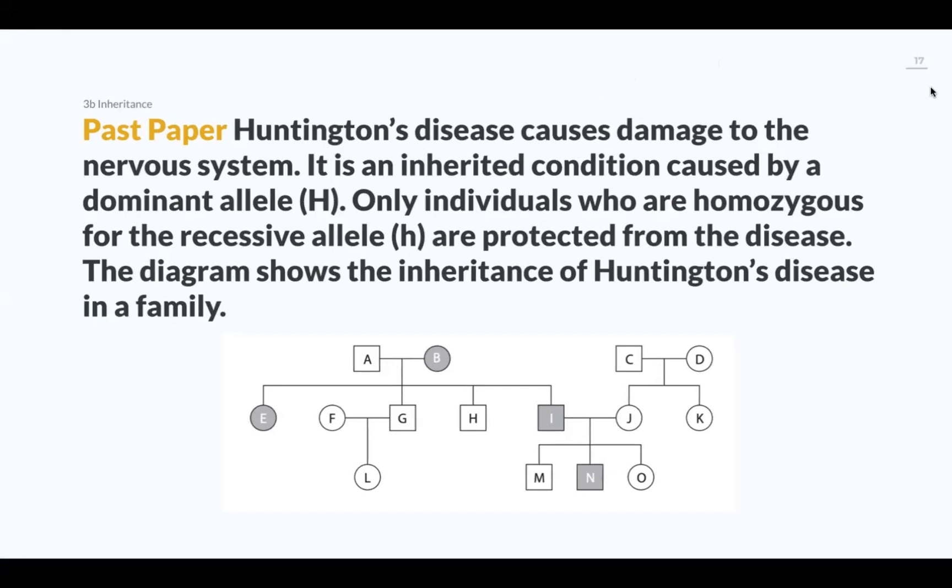Alright biologists, let's take a look here at the pedigree chart with this IGCSE past paper question. Huntington's disease causes damage to the nervous system. It is an inherited condition caused by a dominant allele, big H. So this is a dominant condition, which means if you're either big H, big H, or big H, small h, that means affected by Huntington's disease.